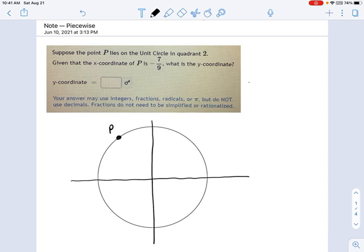Now the x coordinate is negative 7 over 9, okay? So that would be like negative 7 over 9 comma y. I don't know what y is. That's what we're looking for.